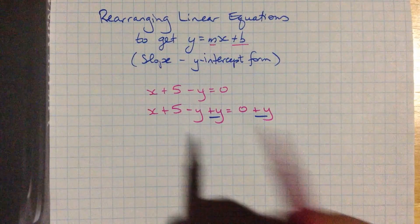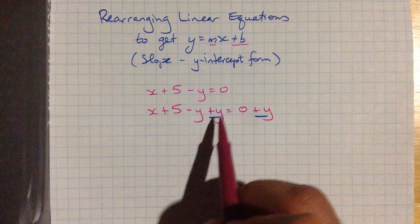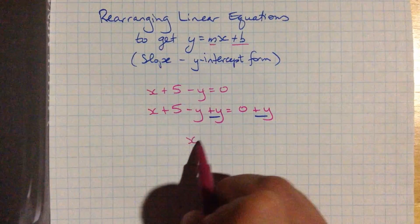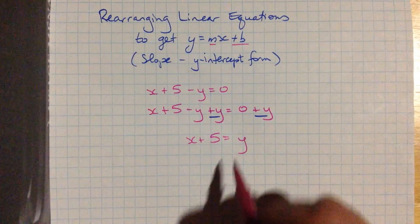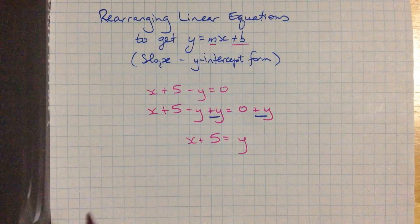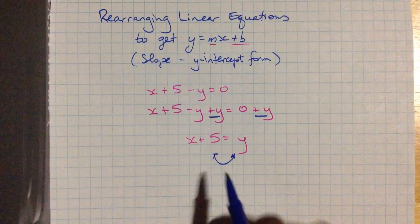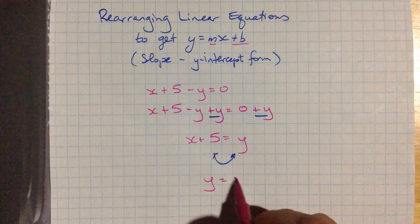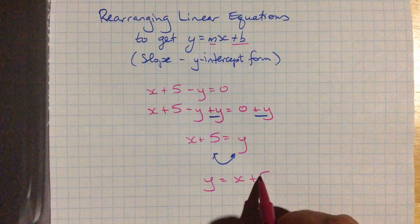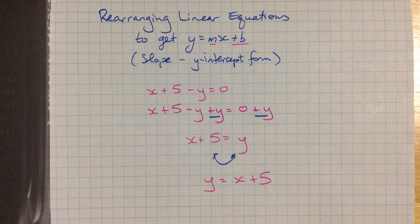When I do that, I see I've got a minus y and a plus y here. That's going to clear out this y from this side, and leave me with x plus 5 equals y over here. And as I say, we typically will write this the other way around. You're okay to do that with equations. You can put everything from one side to the other, just like that. So that's y equals x plus 5.